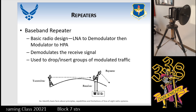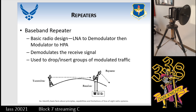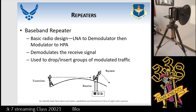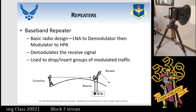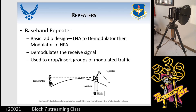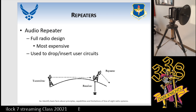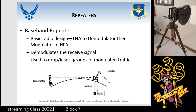In your baseband repeater, this also follows a basic radio design. However, we have the LNA into a demodulator, then a modulator into the HPA. This demodulates the received signal, and the baseband repeater can be used to drop or insert groups of modulated traffic. In the picture, you have your transmitter sending the signal to the baseband repeater, and a telephone, computer, or keyboard inserting modulated traffic into that transmission without interrupting it, and then having all of that repeated and sent out.